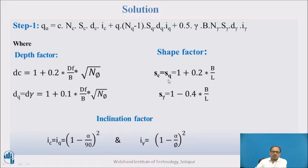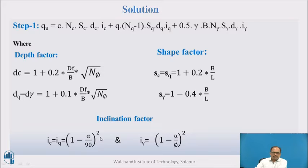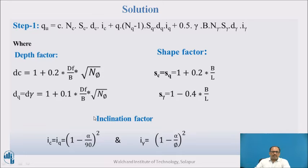For inclination factors, Ic = Iq = (1 − α/90)², where α is the inclination of the load; Iγ = (1 − α/φ)², where φ is the angle of internal friction. In this problem, the load is vertical, so the inclination factors Ic = Iq = Iγ = 1.